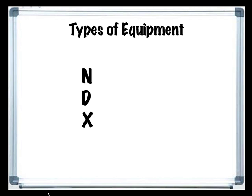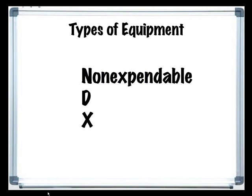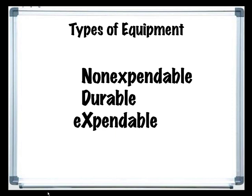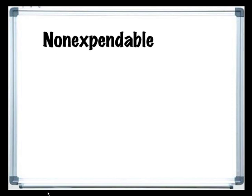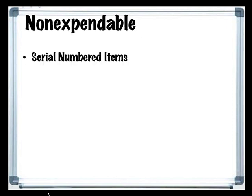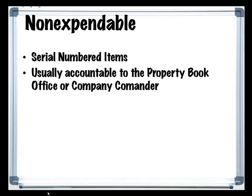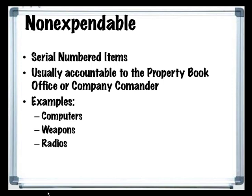In the Army, and in this database, there are three different types of equipment. They are categorized by one of three letters known as ARC codes: N, D, and X. N is for non-expendable equipment, D is for durable equipment, and X is for expendable equipment. Non-expendable equipment generally has a serial number and is usually accountable to the PBO or the company commander. Some examples include, but are not limited to, computers, weapons, and radios.